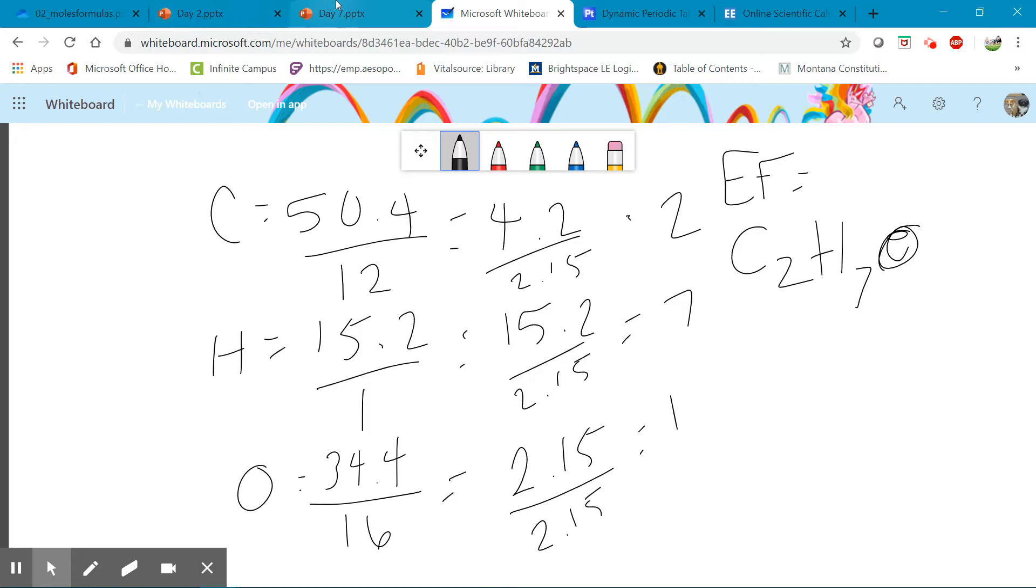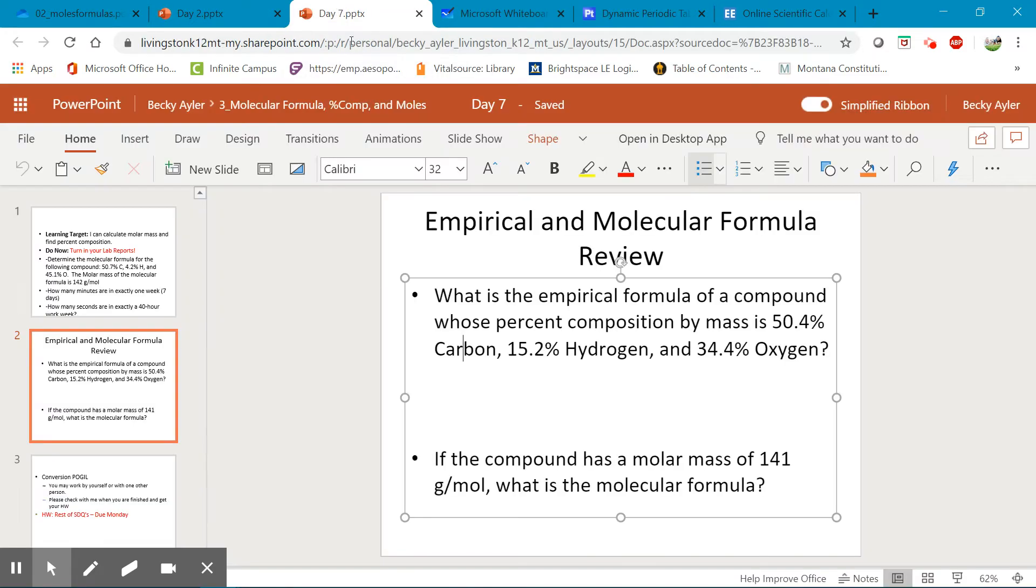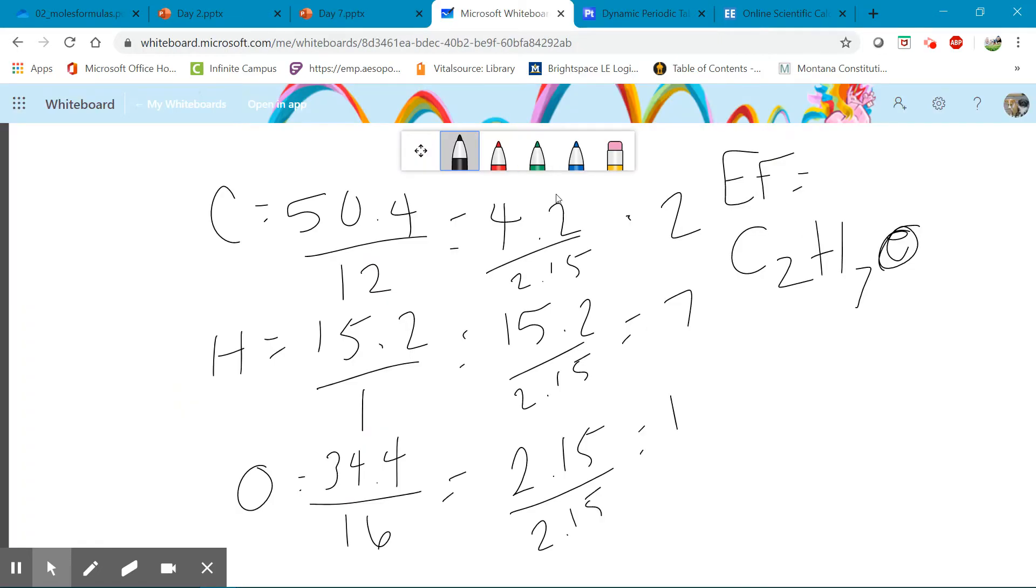Now the next part of the problem is to do the molecular formula based off the empirical formula. So they give us this piece of information that the molecular formula is 141 grams per mole. So if I jump back to my whiteboard here, I'm going to erase everything except for the empirical formula.